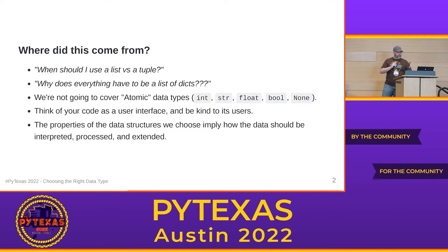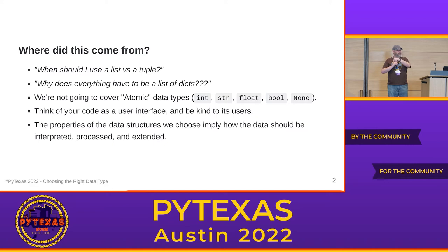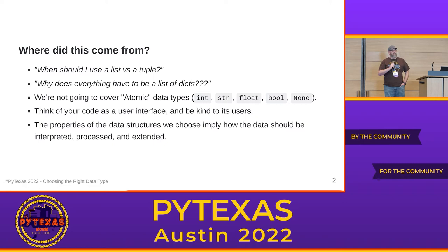The first question I get is: when should I use a list versus a tuple? Why are you using a tuple there? What's with the curly braces but no keys — what is a set? The second is a question I find myself asking more often, especially in code reviews: why does everything have to be a list? Lists are cool and dictionaries are cool, but does everything have to be made of them?